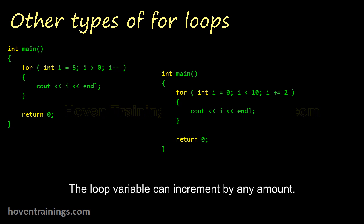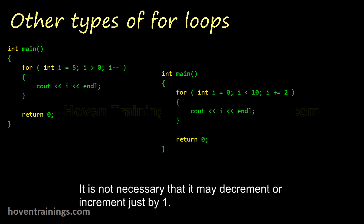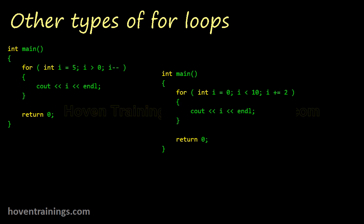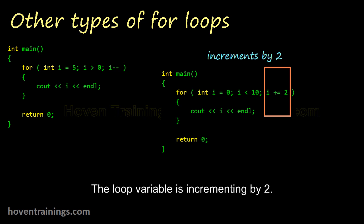The loop variable can increment by any amount. It is not necessary that it may decrement or increment just by one. In this code it is jumping by two. The loop variable is incrementing by two.